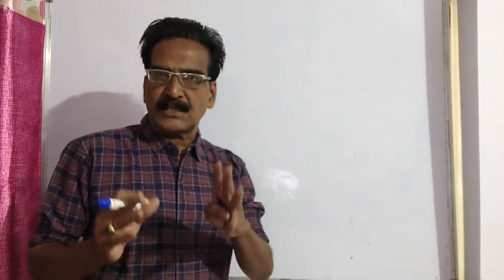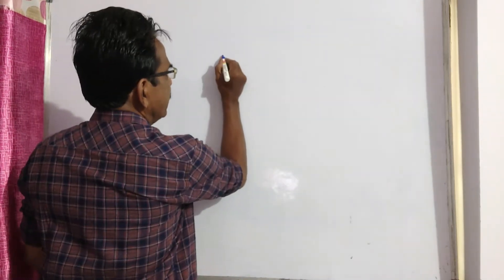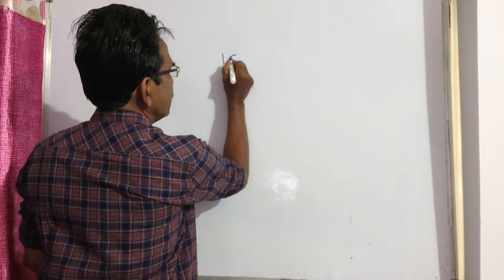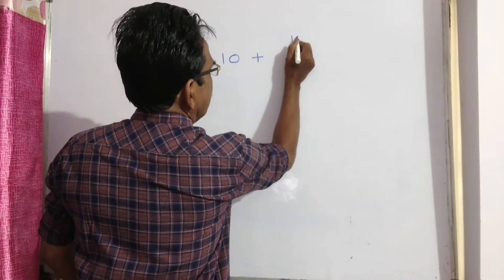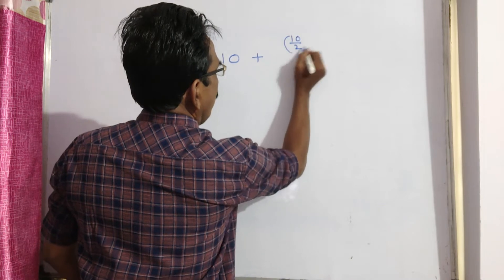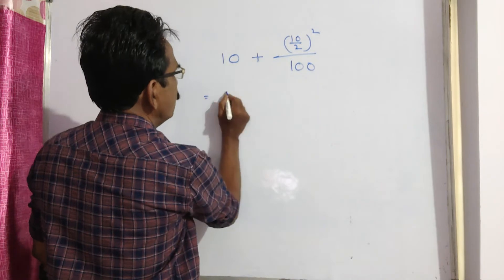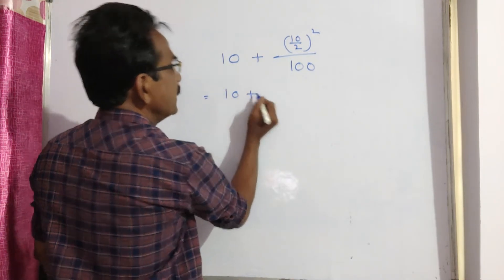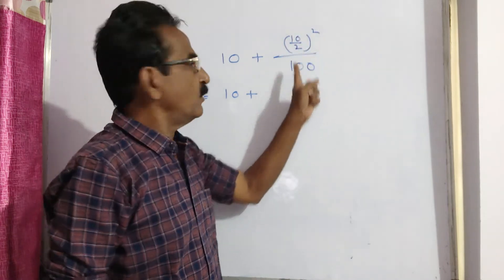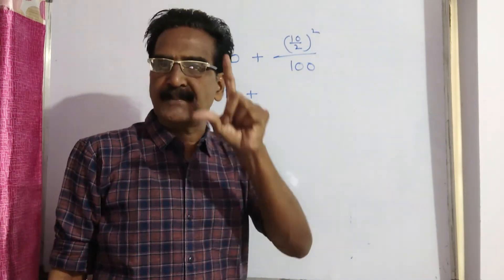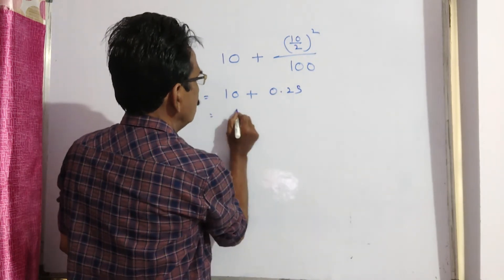This type of problem can be solved by supplying simple logic. See here, the rate of interest is 10%. So 10 plus 10 by 2 whole square by 100. This equals 10 plus 10 by 2, which is 5, 5 square is 25, 25 by 100 means 0.25. So 10 plus 0.25, that is equal to 10.25 percent.